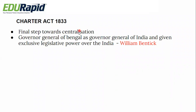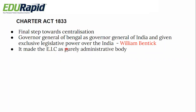The Charter Act of 1833 is the final step towards centralization because previously the Governor General of Bengal only controlled the Bengal provinces, but now as Governor General of India, there is one single authority for the entire country — William Bentinck. Every power now comes under the Governor General of India. Additionally, it made the East India Company a purely administrative body, abolishing its purpose as a commercial or trading body. Now the East India Company looked after administrative functions, not commercial functions.